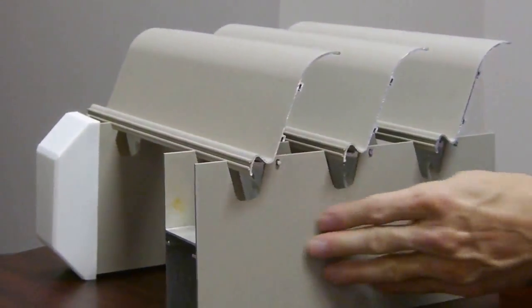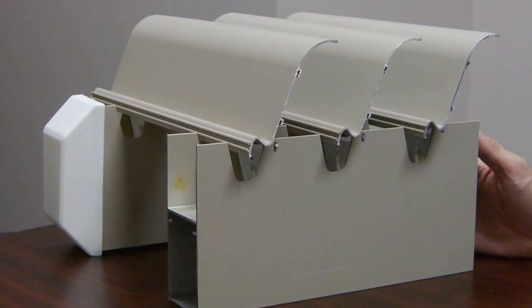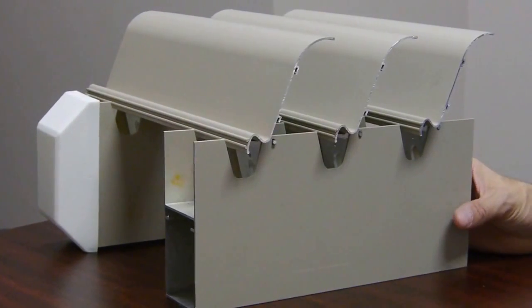So the first step is to place the rafters across the steel structure or pergola, whatever you're placing the roof on top of, roughly about five feet apart.